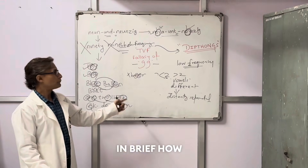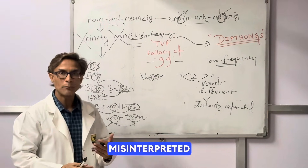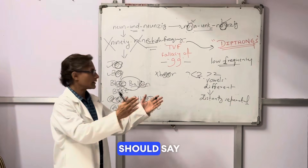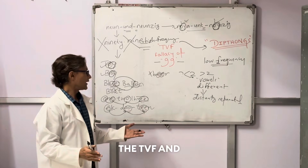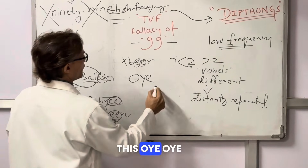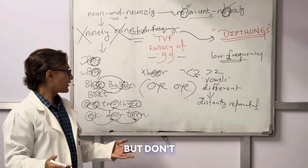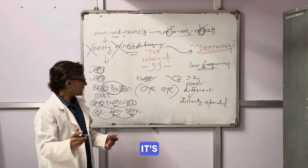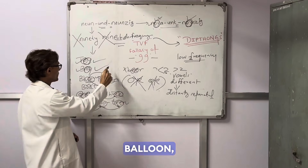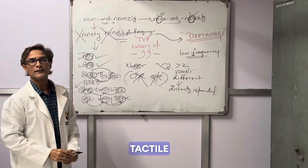So in brief, this is the history of TVF — what actually happened, how it was misinterpreted, how it became a myth, and what correction should be made for what one should say while doing TVF. For Indian students — and ending with a light note — 'oe oe' could technically be a low frequency sound, but don't ask the patient to say 'oe oe' — it is dangerous! So we settle with toy, boy, blue balloon, boat, one-two-three, ek-do-teen for examining tactile vocal fremitus.